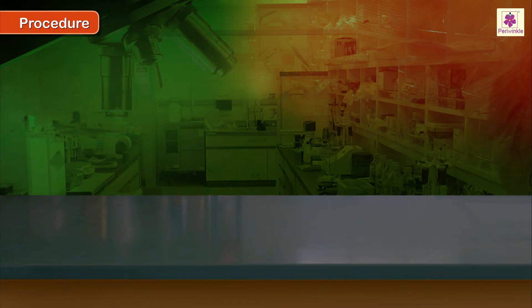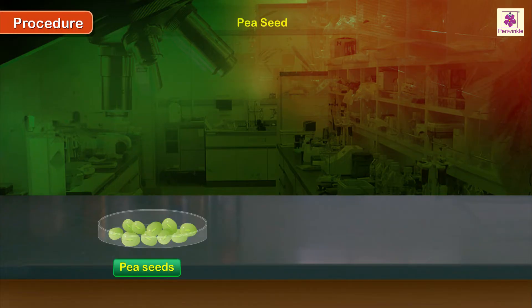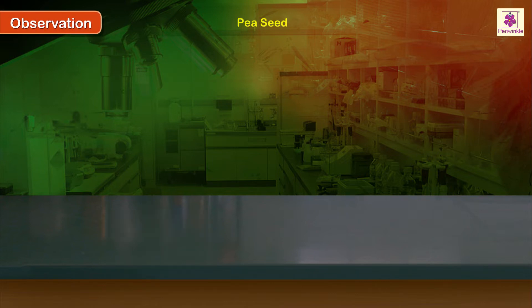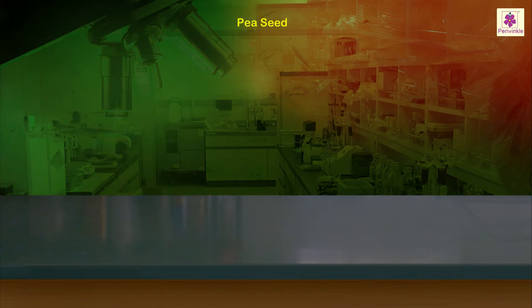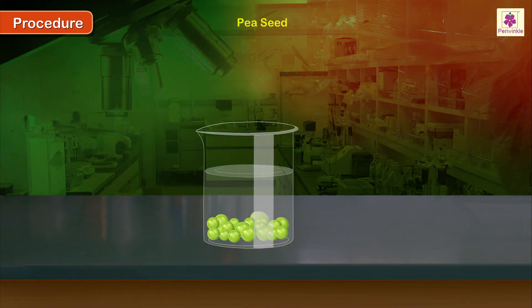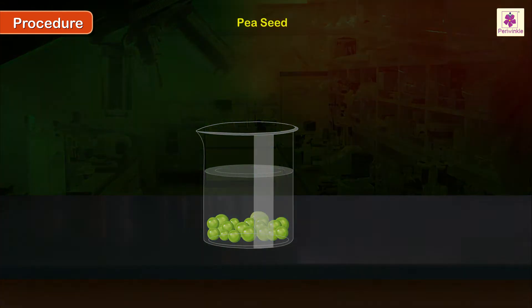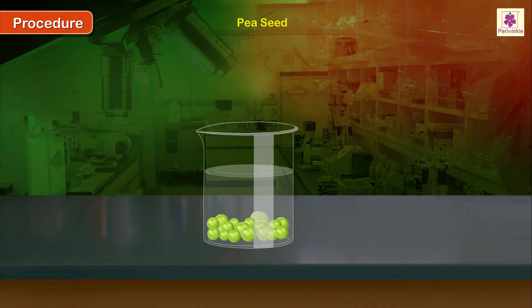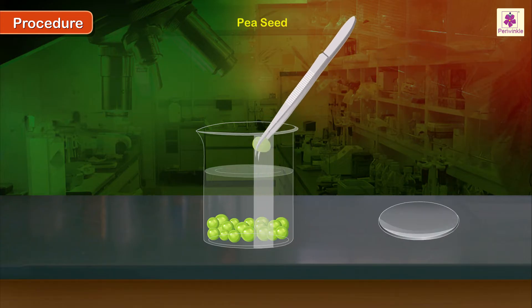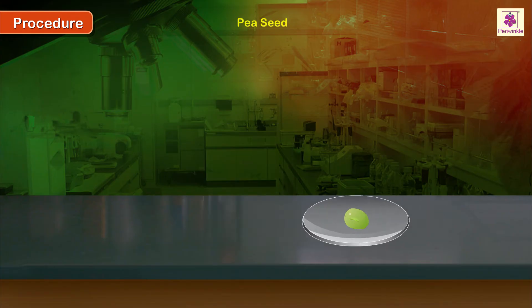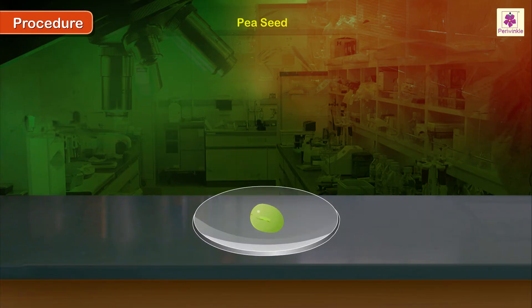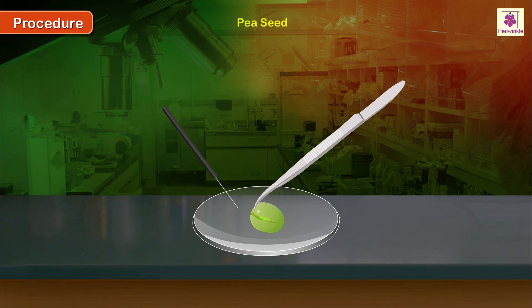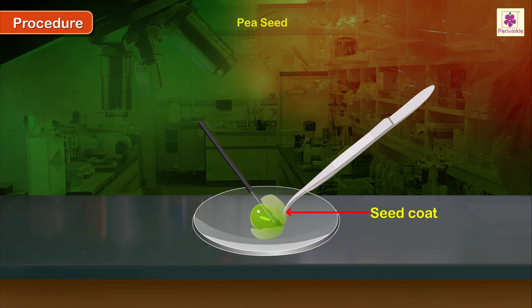Procedure: Observe a single pea seed from outside. Observation: the seed is green and brown. Take the pea seeds in a beaker and soak them overnight in water. Using forceps, carefully pick up one seed from the beaker and place it in a watch glass. With the help of forceps and a needle, remove the seed coat from the seed.